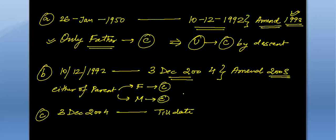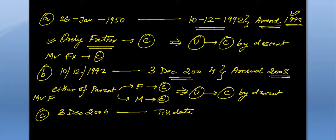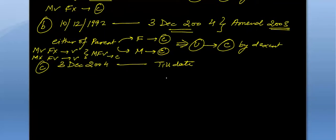In the first case, only the father's citizenship counted — even if the mother is a citizen of India but the father is not, you could not claim citizenship by descent. This was rectified by the amendment. After 1992, if the mother is a citizen of India and the father is not, you can get citizenship. If the father is citizen and mother is not, you can still get it. If both mother and father are citizens, you can also get citizenship. So either of the parents being a citizen allows you to get citizenship by descent.